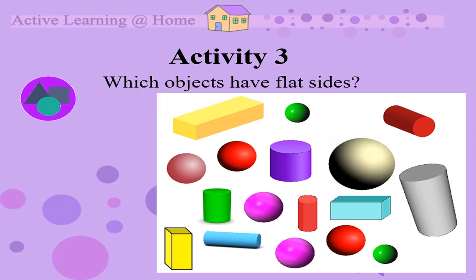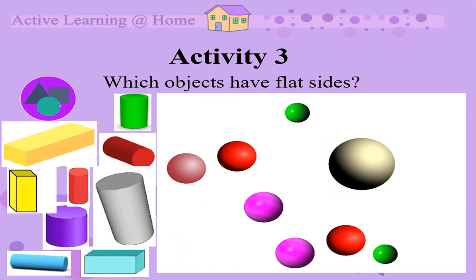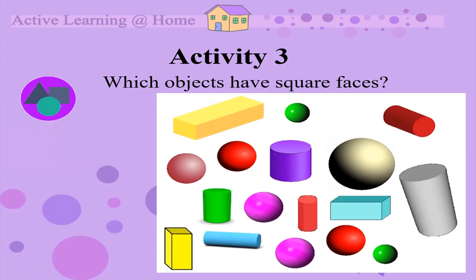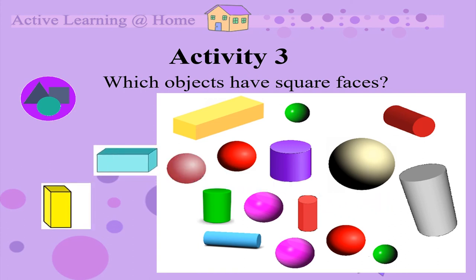Which objects have flat sides? Find them now. Do you see that all the boxes and cylinders have flat sides? Which objects have square faces? Find them now. 2 of the boxes have faces that are squares. See in what other ways you can group these shapes.